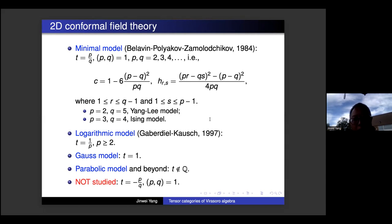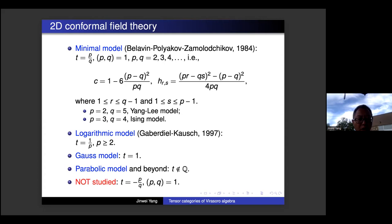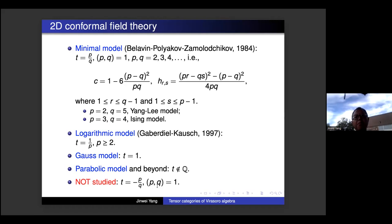We can look at the list in Kogan and Iohara's book. When t = 1/p, p ≥ 2, these are called logarithmic models, studied by Gaberdiel and Kausch. When t = 1, it's called the degenerate minimal model or Gauss model. When t is not rational, some physicists studied special cases called parabolic models. And when t = −p/q with p, q coprime, this is not studied in the literature at all.